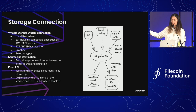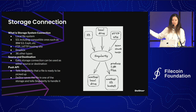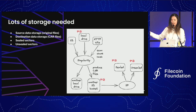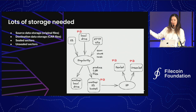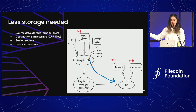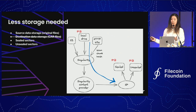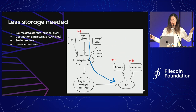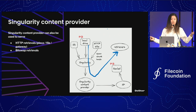Singularity V2 supports 40-plus different types of connections. This is the storage copies needed for a single file—you need four different copies—and then there's the inline preparation algorithm. We talked about how Singularity lets you eliminate one out of those four copies. Singularity can also serve as a content provider.